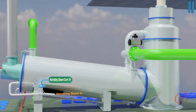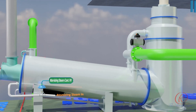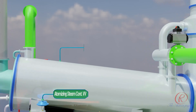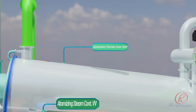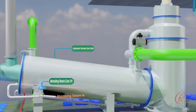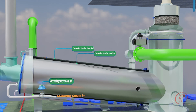Atomizing steam control valve: to regulate the amount of steam used for atomizing fuel oil. Combustion chamber outer shell: the outer shell to prevent heat radiation from the combustion chamber to the outside. Combustion chamber inner shell: the inner shell acts as a heat retainer and as a barrier to the jacket cooling water.